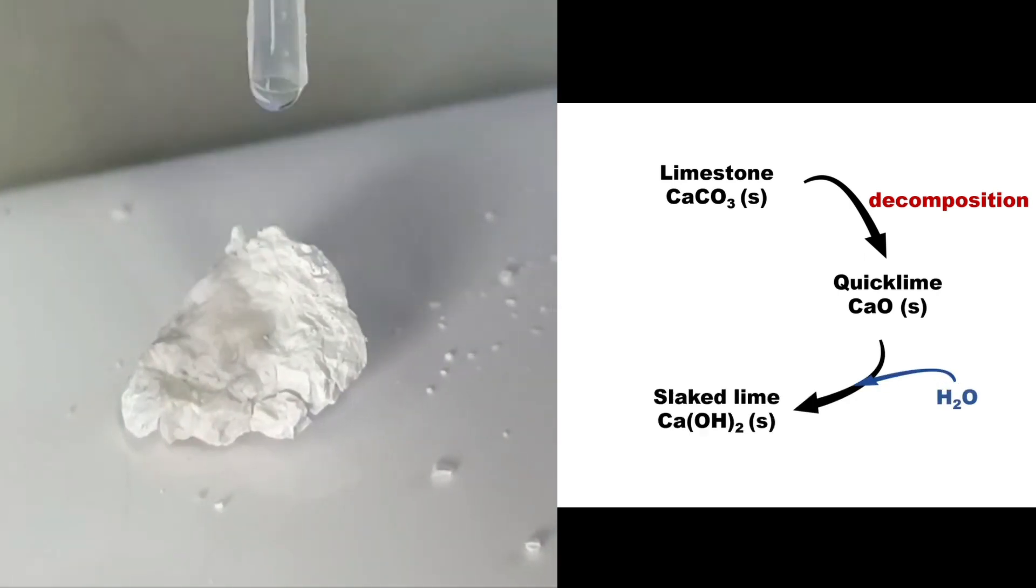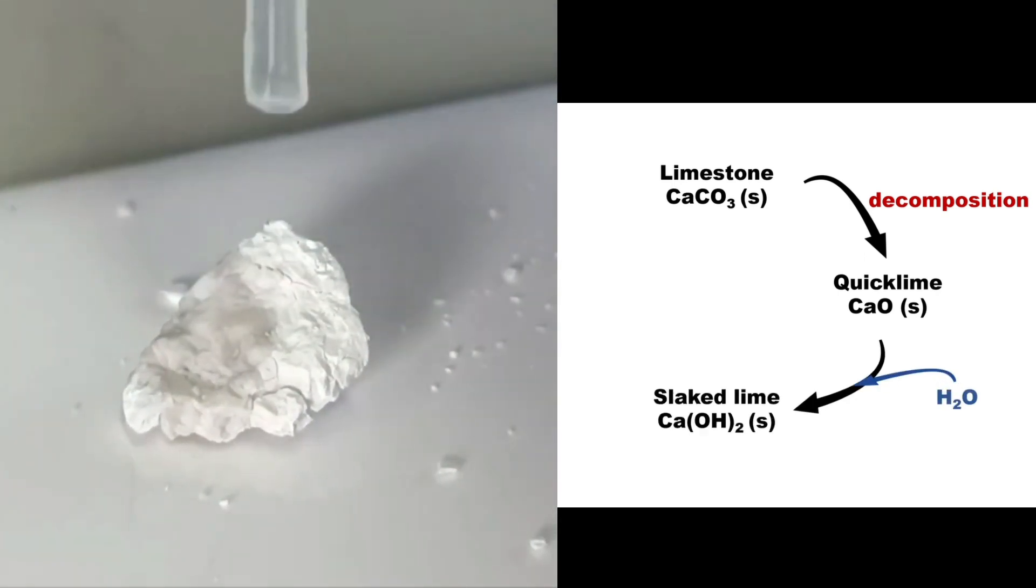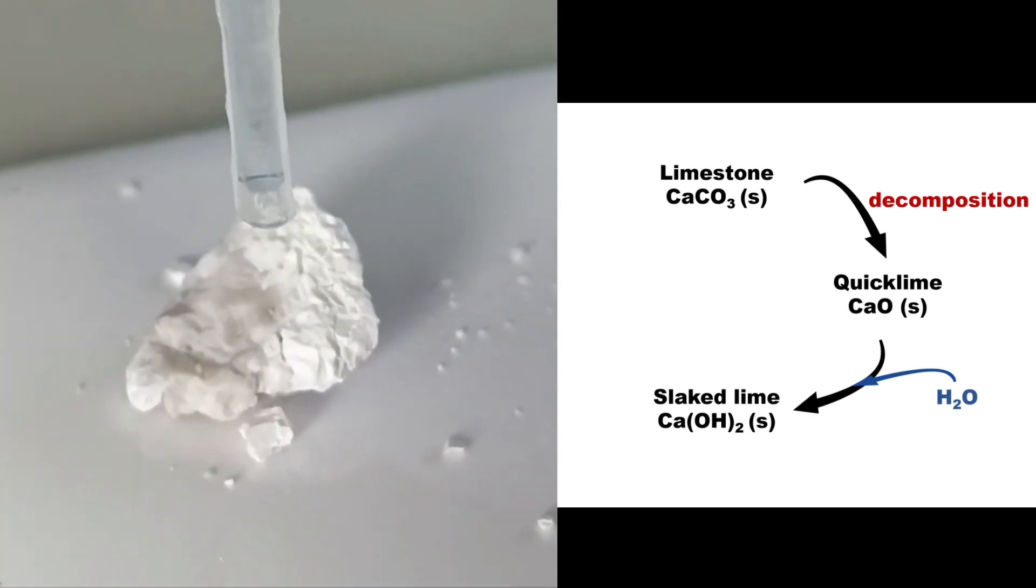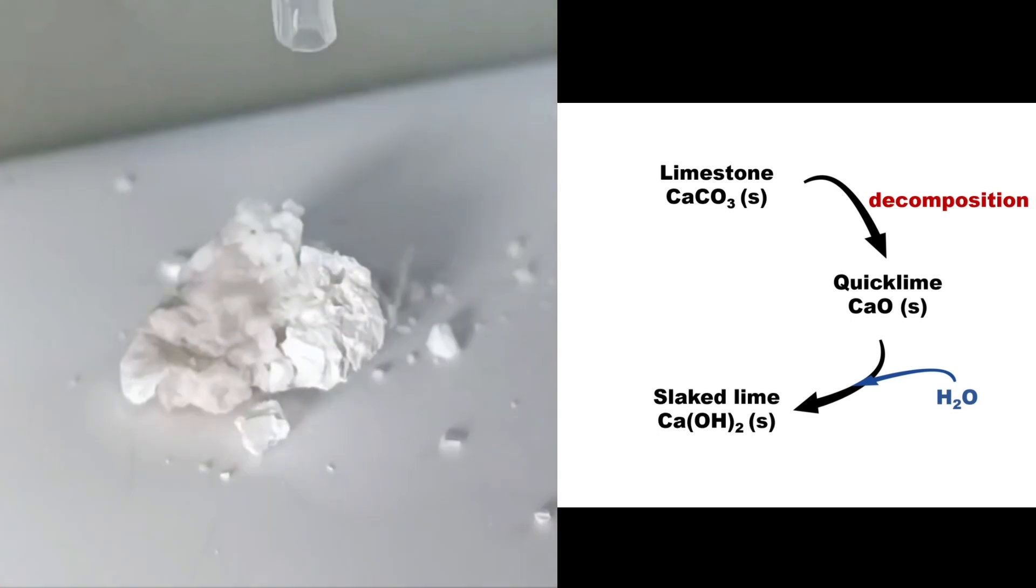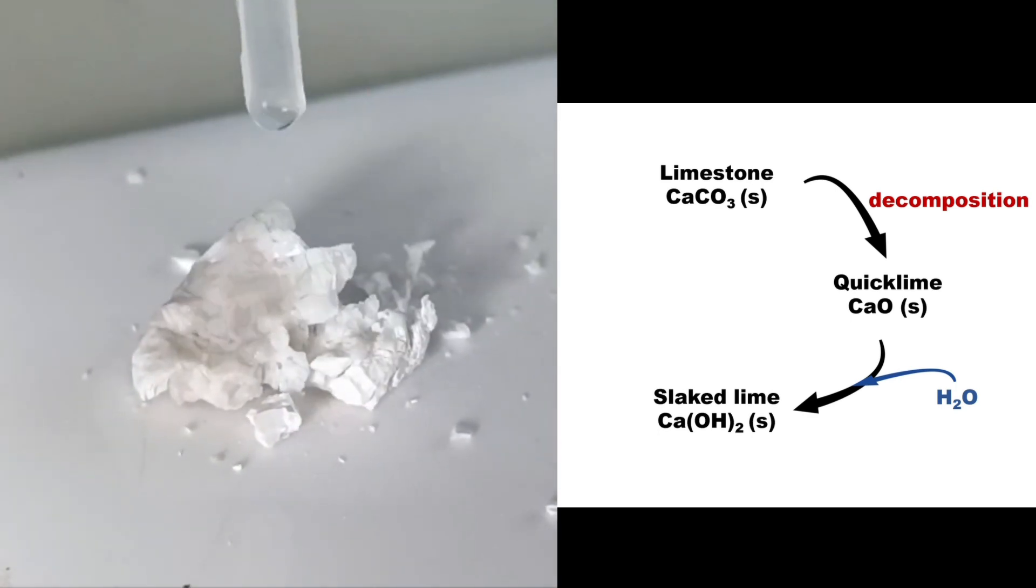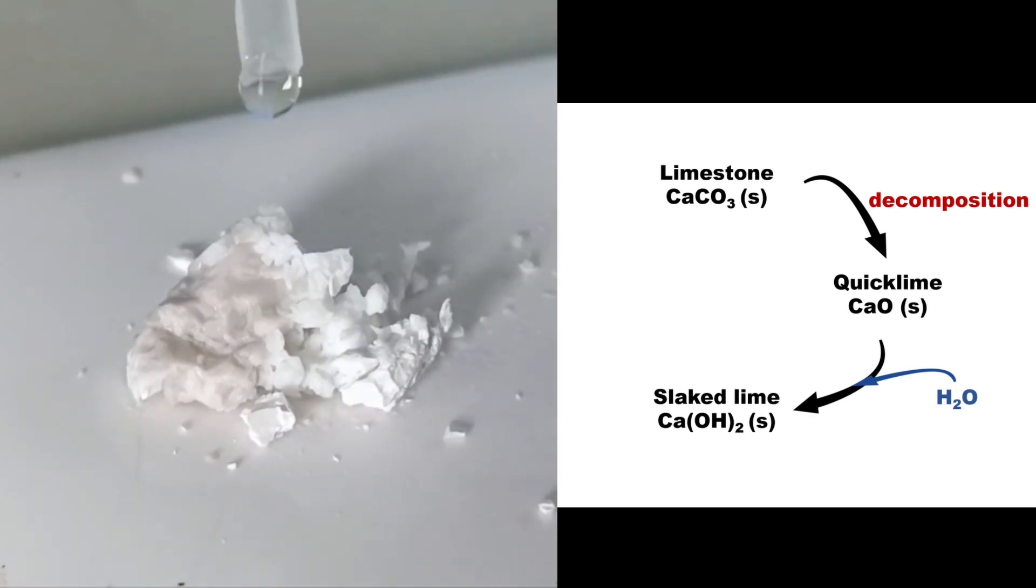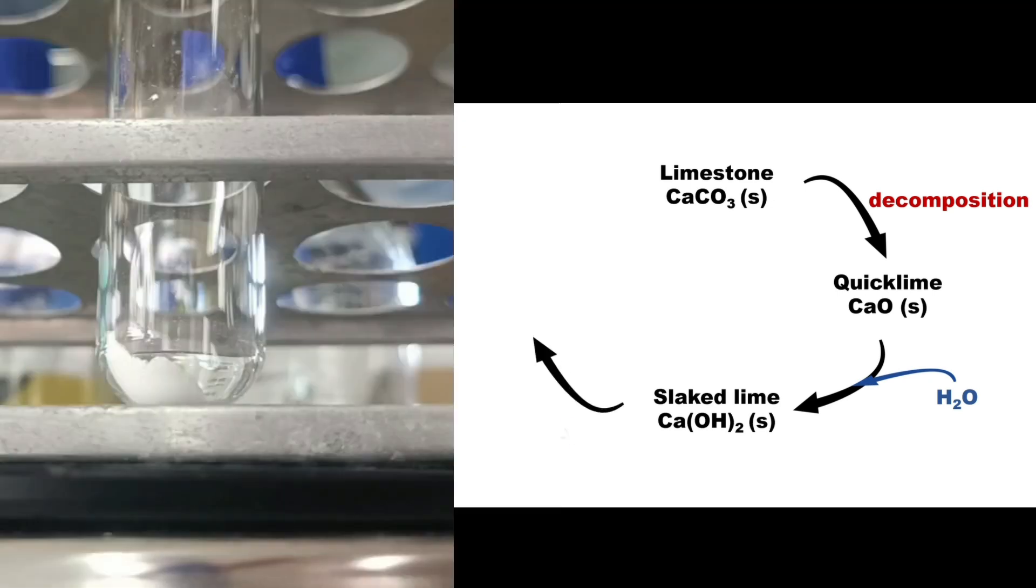Next, when a few drops of water is added, calcium oxide undergoes a reaction to produce solid calcium hydroxide, or slaked lime. This reaction is exothermic, and we can see steam as evidence of the heat released.